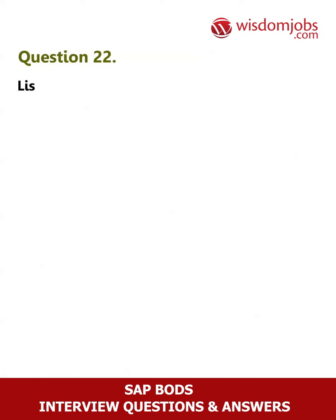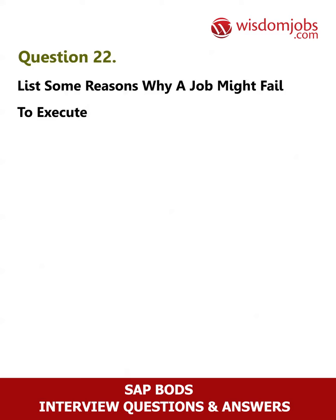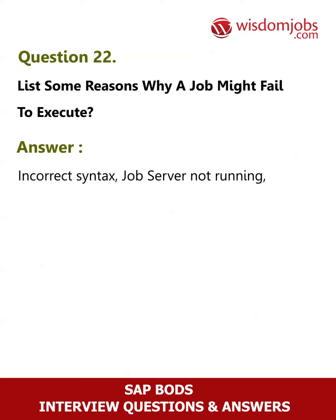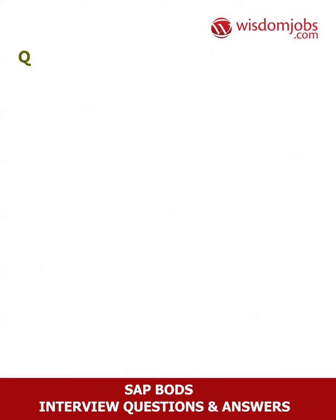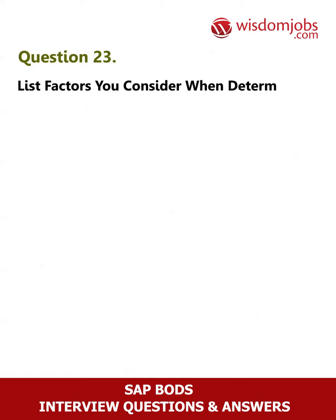Question 22: List some reasons why a job might fail to execute. Answer: Incorrect syntax, job server not running, port numbers for designer and job server not matching.